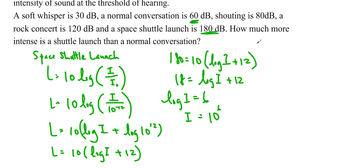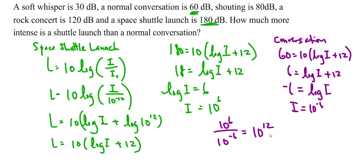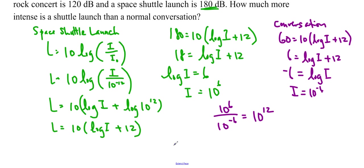And let's do it for the normal conversation, which is 60 decibels. So 60 is equal to 10 log I plus 12. Divide by the 10 again and subtract. So the intensity is 10 to the negative 6. So to get the difference in intensities, we're going to do 10 to the 6 divide by 10 to the negative 6, which gives us 10 to the 12. So that is how much more intense a shuttle launch is than a normal conversation. A shuttle launch which is 10 to the 12 times more intense than conversation, which totally makes sense. It is quite intense.